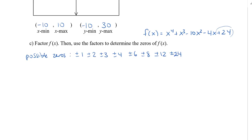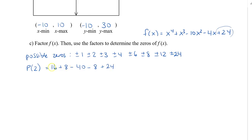That's a lot of possible factors. I know that plugging in 1 won't give me 0, so let's try 2. When we plug in 2: 2 to the 4 is 16, plus 2 cubed gives 8, minus 10 times 4 is 40, minus 4 times 2 which is 8, and then plus 24. So 16 plus 8 gives me 24, and 24 plus 24 is 48, and then I also have negative 48, so that actually gives me 0.